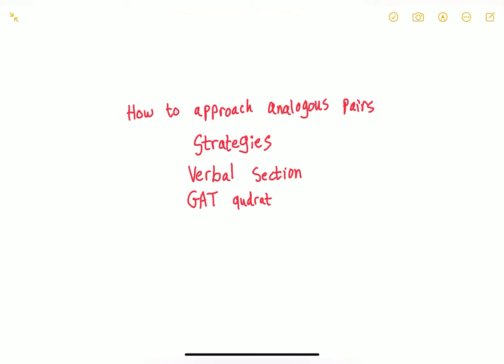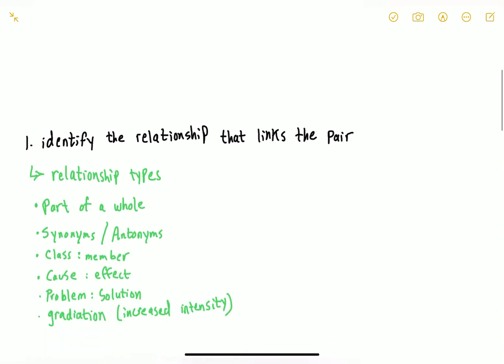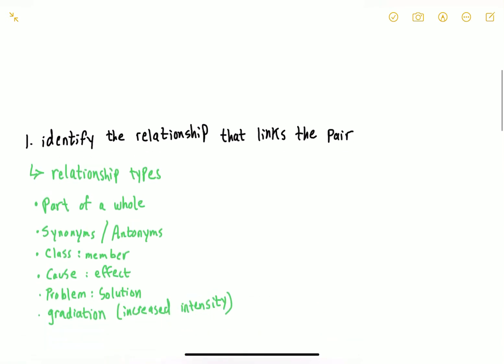So let's get right into the video. We're going to start with the strategy. This is my set of rules on how to approach it. First, what you have to do is identify the relationship that links the pair, the analogous pairs. These are some example types of relationships: it can be part of a whole, synonyms or antonyms, class and member, cause and effect, problem solution, or gradation with increased or decreased intensity.